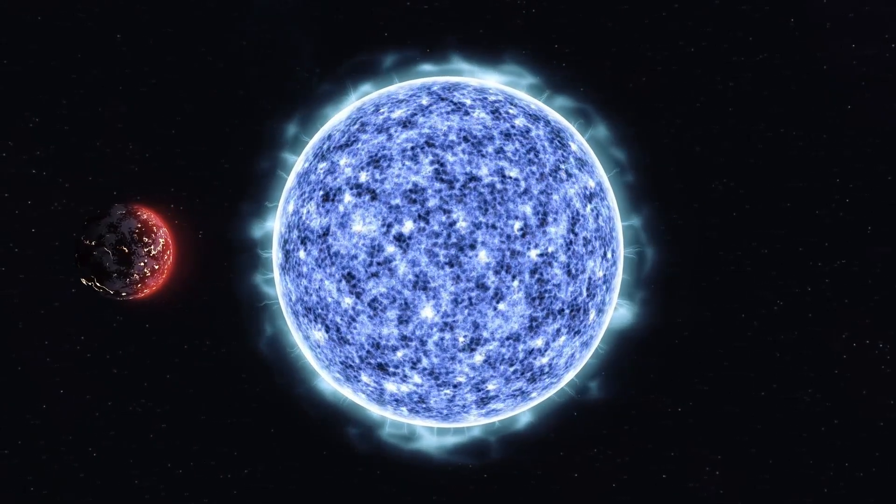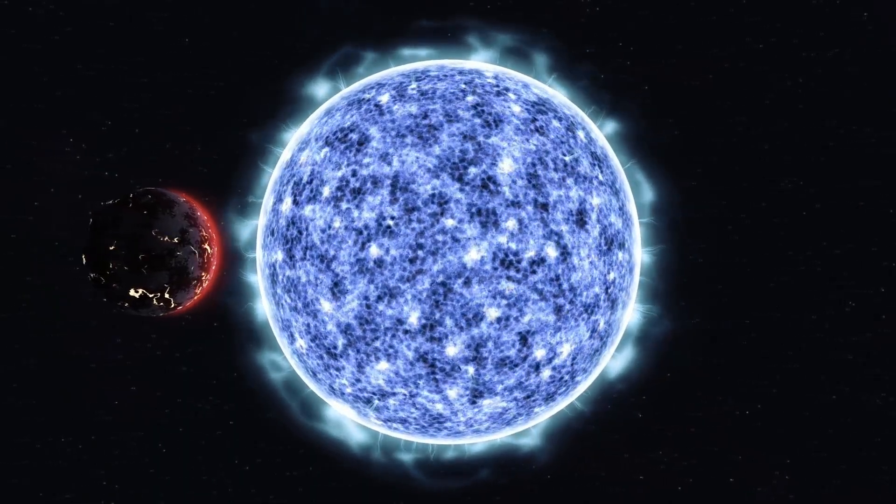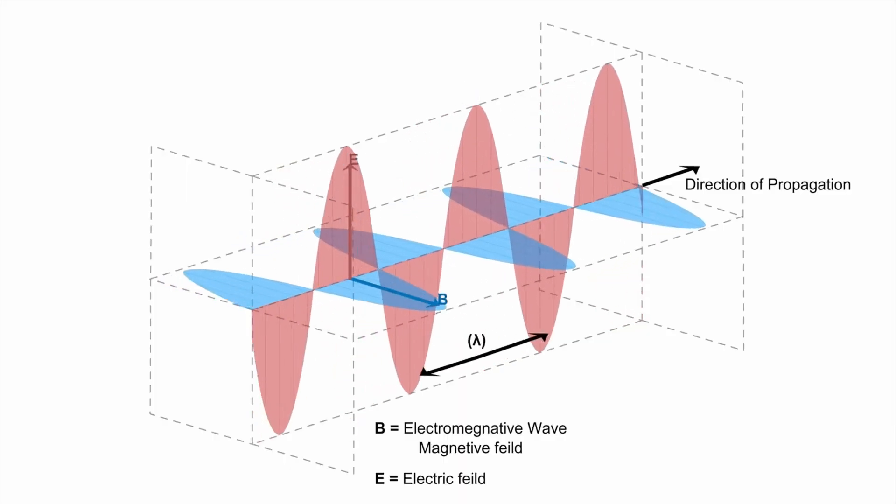The interstellar object known as Threepui Atlas, a wandering fragment from the deep beyond, has been captured by Webb's powerful gaze, and what it reveals has sent ripples through every observatory and research center on Earth.